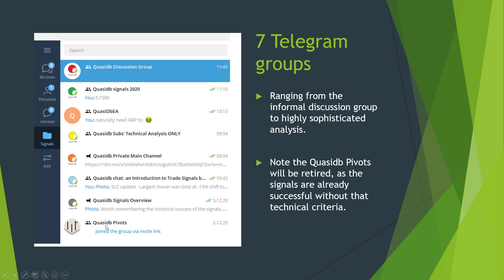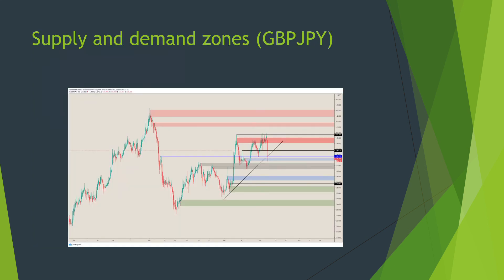The signal overview will probably be retired, maybe next year, because the signals are going incredibly well and we don't really need technical criteria to validate them anymore — we don't need the validation from being above or below a monthly pivot. There are seven groups in total; one is optional but recommended — it does get quite noisy, but it's a fun place to hang out and share trade ideas.